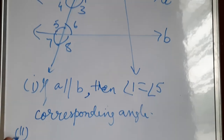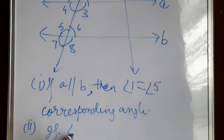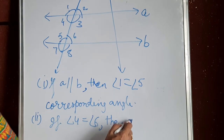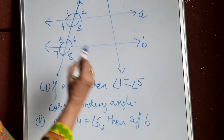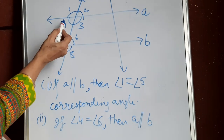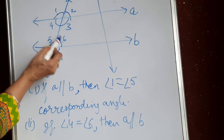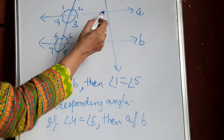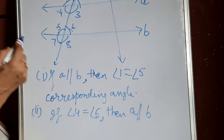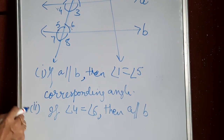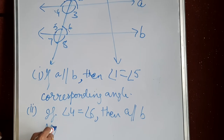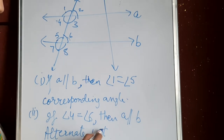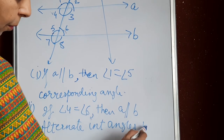Statement (ii): if angle 4 equals angle 6, then A is parallel to B. These two angles are alternate interior angles and they are equal, so lines are parallel. The property name is the alternate interior angles property.